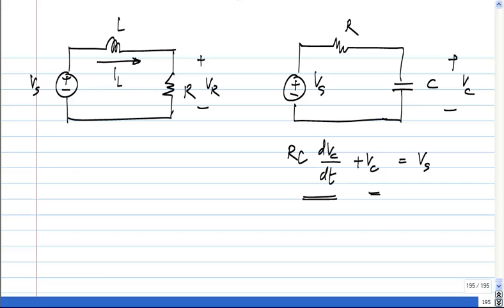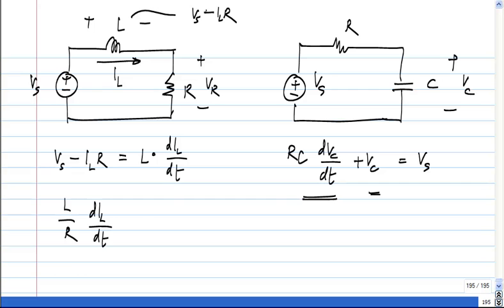Now, in this case what do we have, Vs minus Il*R which is the voltage across the inductor is L times diL by dt. So, if I rearrange this I get L by R time derivative of Il plus Il equals, and if I write it in terms of Vr there is nothing special about it.